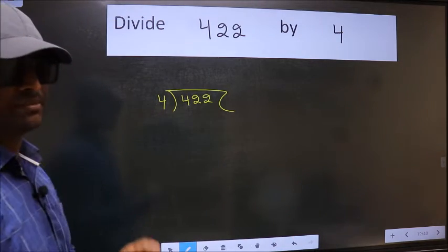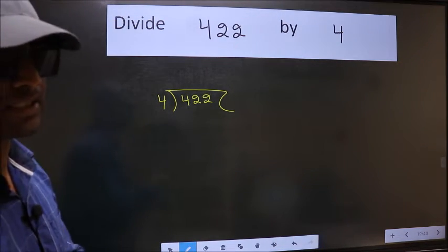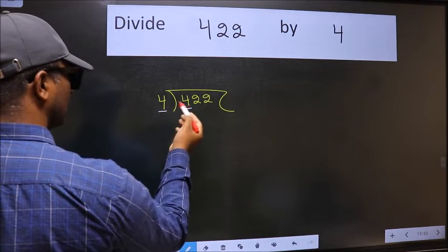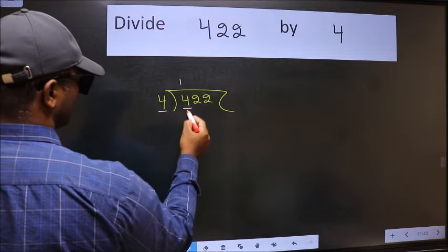This is step 1. Next, here we have 4, and here also 4. When do we get 4 in the 4 table? 4 once is 4.